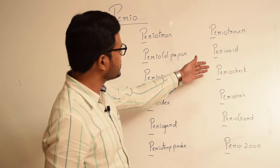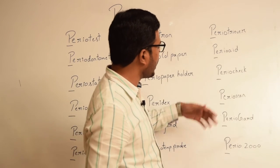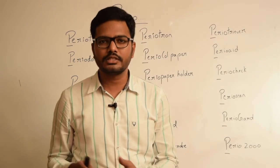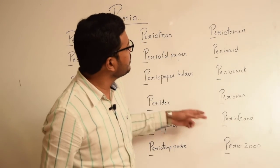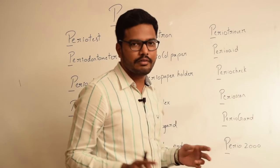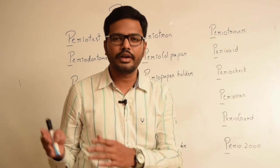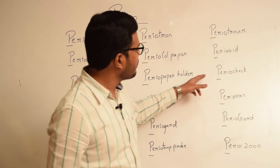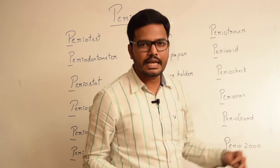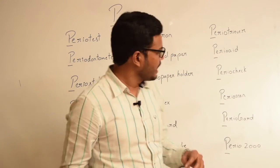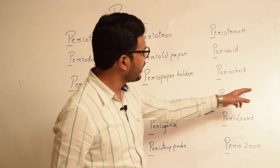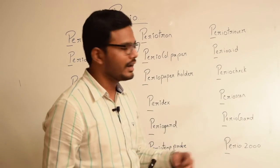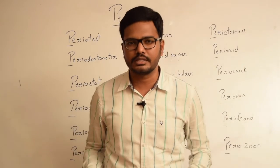Then we have PerioCheck, Perioscan, and PerioGuard. These are chair-side molecular diagnostic kits mainly used for diagnosis and evaluation of prognosis of various periodontopathies. In PerioCheck, we evaluate neutral protease enzyme. In Perioscan, we analyze beta-glucuronidase. And in PerioGuard, we analyze aspartate aminotransferase.